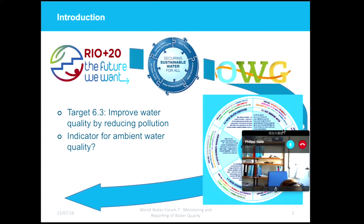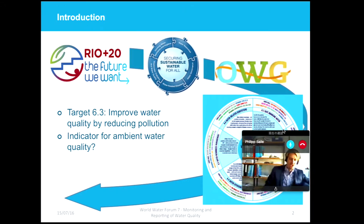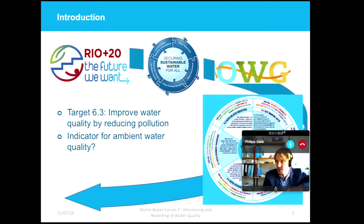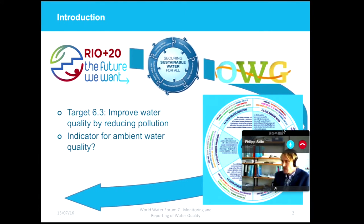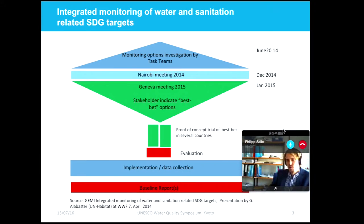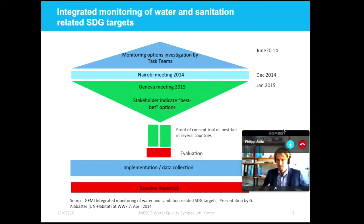Based on the experiences from the Millennium Development Goals, a number of UN agencies formed an initiative aiming at integrating monitoring of water and sanitation related SDG targets back in 2013, realizing that the water sector at the moment does not have an integrated and coherent monitoring framework to support the member states and the international community in measuring progress towards the SDGs on sustainable water and sanitation.